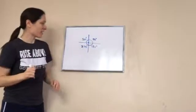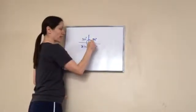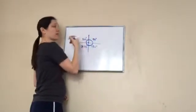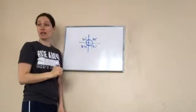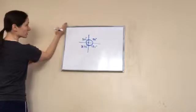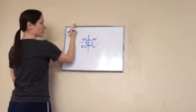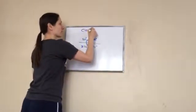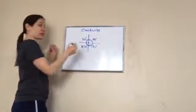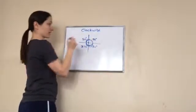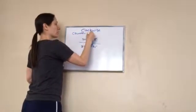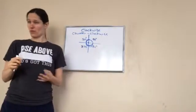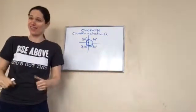Do you know what it's called when you go around the circle this way? It is called a complete circle, but what they call it in math is clockwise — because a clock moves this way, starts from 12 and goes 1, 2, 3, 4, 5, 6, 7, 8, 9, 10, 11, 12. That's called clockwise. So guess what it's called when you go the other way? Counter-clockwise.